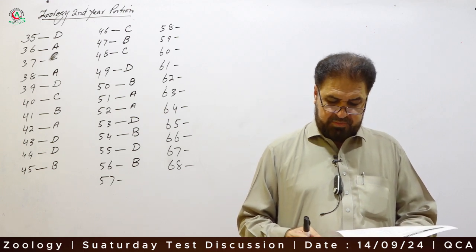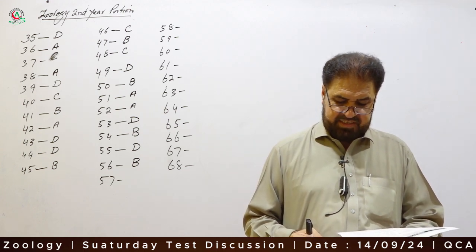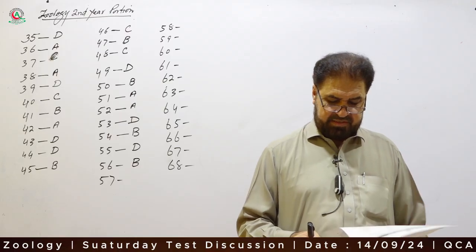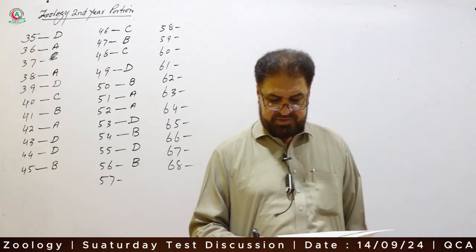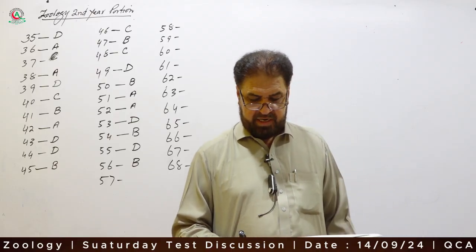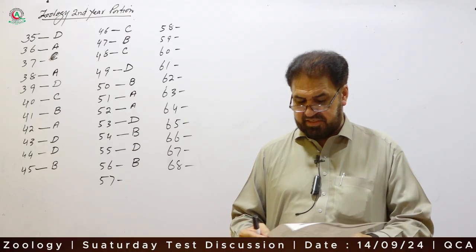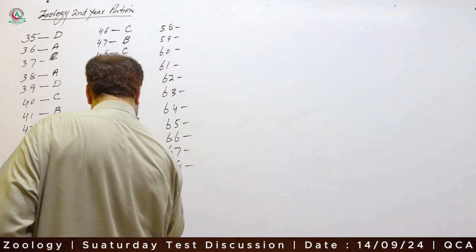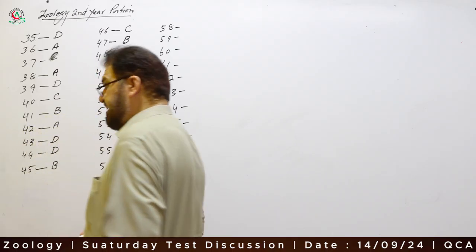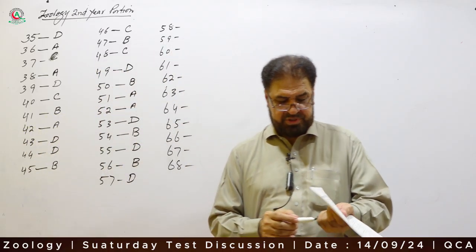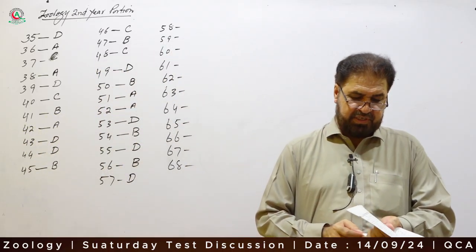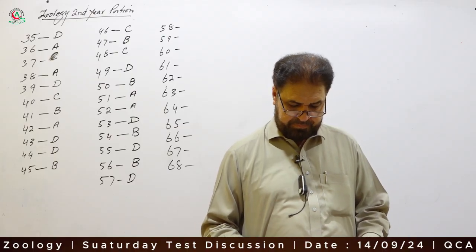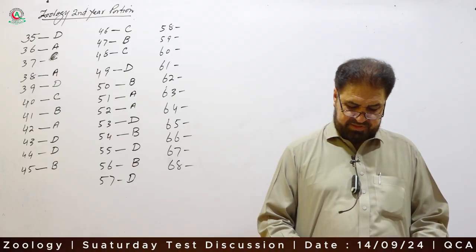Question 57: Which one of the following hormones is NOT secreted by the anterior pituitary — TSH, FSH, ACTH, or ADH? ADH is the correct option. ADH is secreted by the posterior pituitary, or neurohypophysis. Correct option is D.